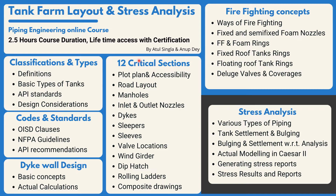Here we will look at 12 critical sections — the basic things we have to cover when talking about layout and tank farms. For example: the plot plan and its accessibility, road layouts, manhole orientation, manual locations, inlet and outlet nozzles, DICOL, slippers, sleeves, valve location, wind girder, dip hatch, holing ladders, and composite drawings. Once we go through these 12 items, we can implement the same concepts in any project.